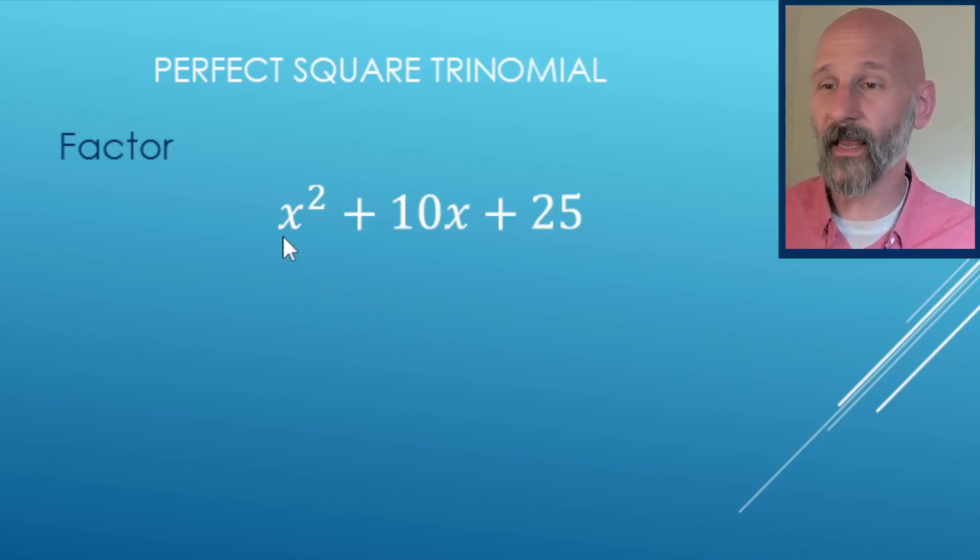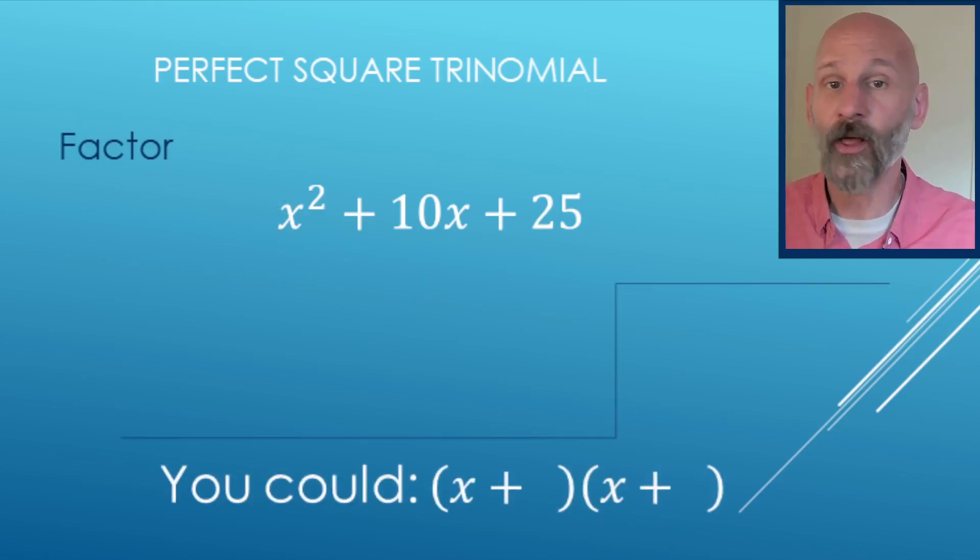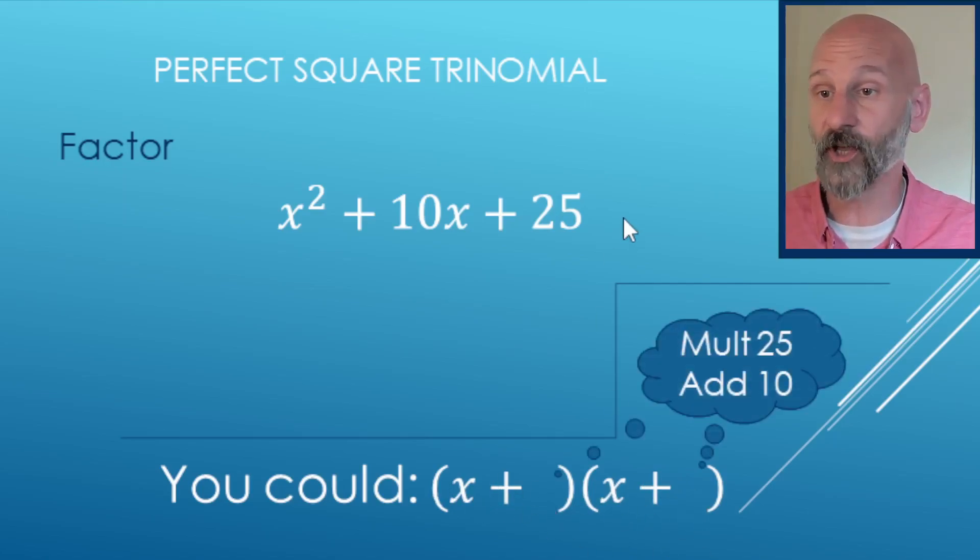So here we're going to factor the quadratic x squared plus 10x plus 25. Now, because there's no number in front of the x squared, a equals 1, or the coefficient is 1, you could set it up like this: x plus, x plus, and then the numbers here are going to multiply to 25 and add to 10. You could do that.